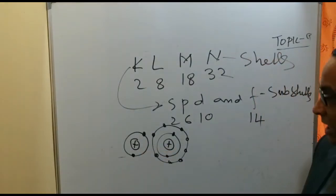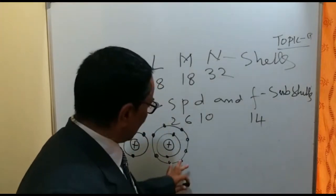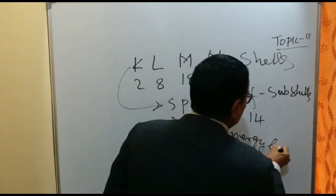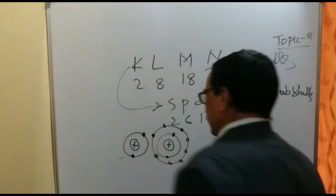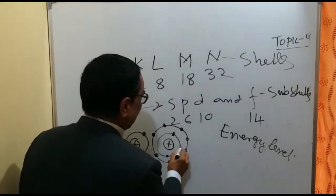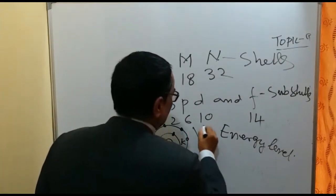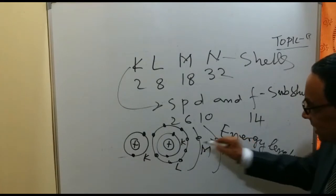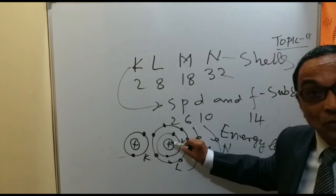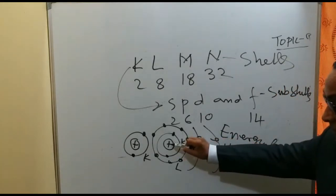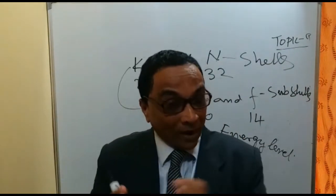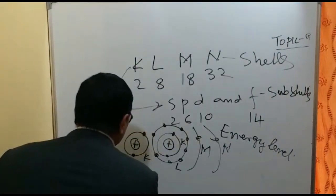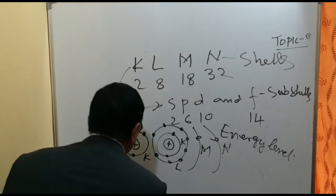When we talk about electrons, we should have a very clear picture of energy levels. Energy level means a condition where, for example, in the K, L, M, and N shells, one electron in the K shell is very close to the nucleus, while an electron in the N shell is far away from the nucleus. So there are two conditions in an atom for an electron: one where it is very close to the nucleus, and one where it is far away.